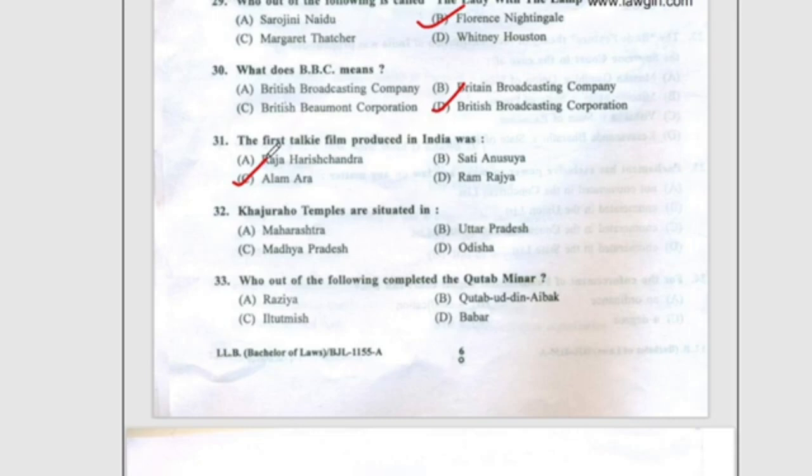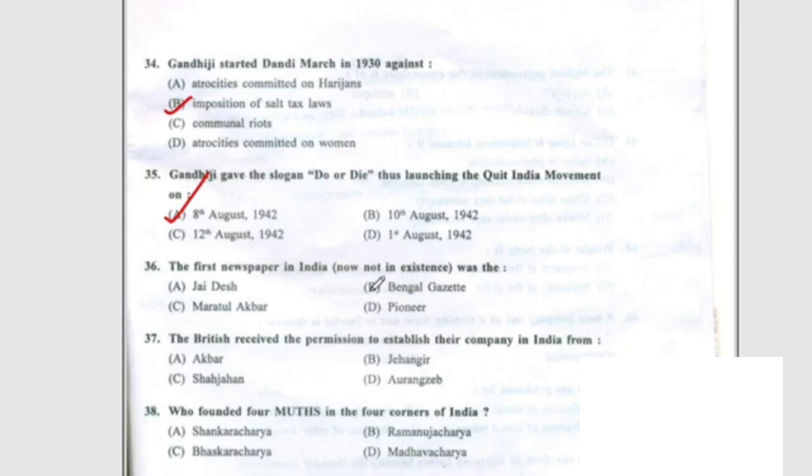Question 32: Khajuraho temples are situated in the state of Madhya Pradesh. Question 33: Iltutmish completed the Qutub Minar, option C. Question 34: Gandhi Ji started the Dandi March in 1930 against the imposition of salt tax laws. Question 35: Gandhi Ji gave the slogan 'Do or Die', launching the Quit India Movement on 8th August 1942, option A. Question 36: The first newspaper in India, now not in existence, was the Bengal Gazette, option B.